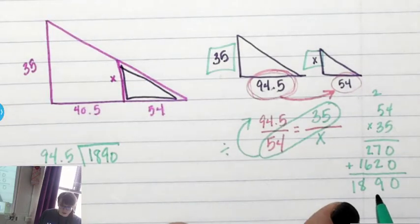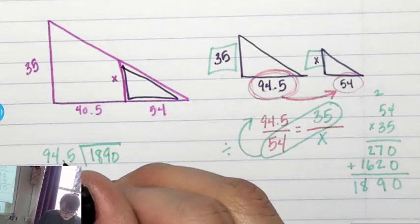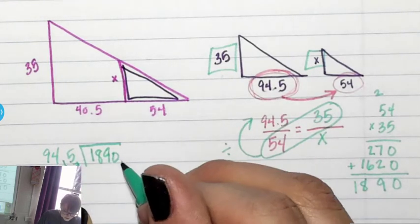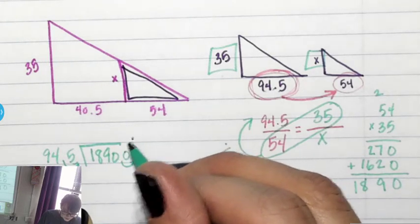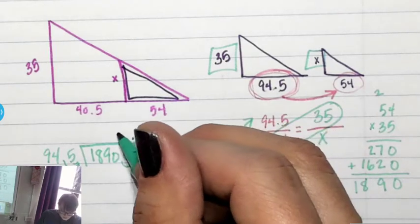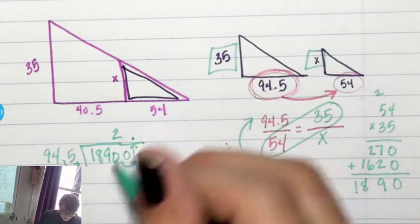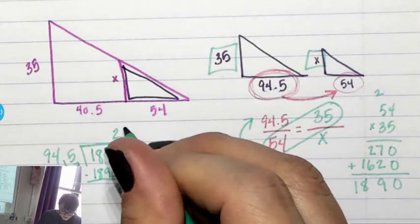So, 1890 divided by 94.5. The product goes in the division sign. And if I have a decimal outside, I have to move it, move it, put a 0, bring it up. I'm going to guess 2. And it's 2. I see 2. That's 1890. Subtract, 0, and put a 0.